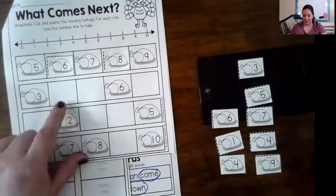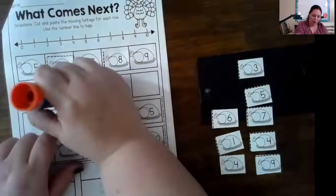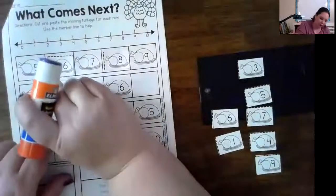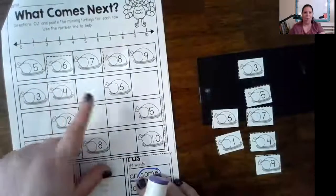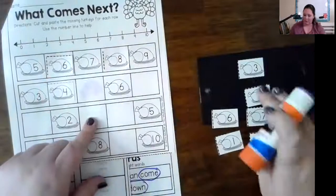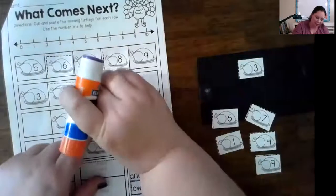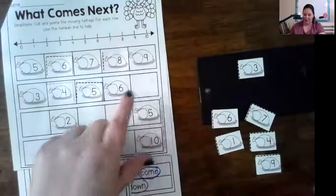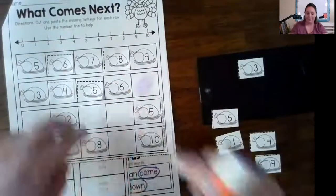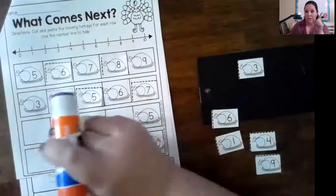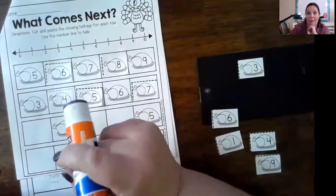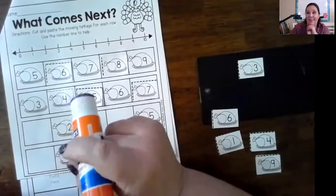So three, what comes after three? Four. What comes after four? Five. Very good. And what comes after six? Seven. Hey, don't forget to ask your grownups, why was six afraid of seven? Seven, eight, nine.